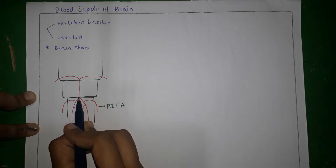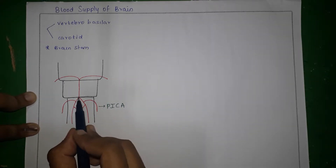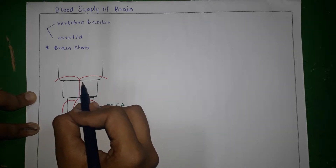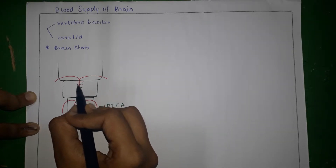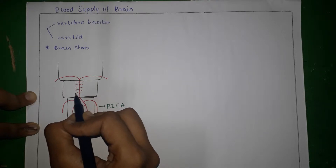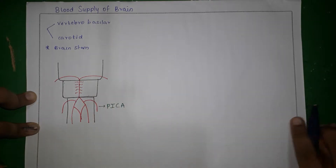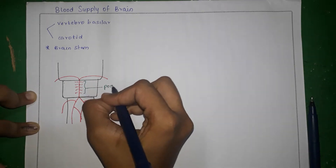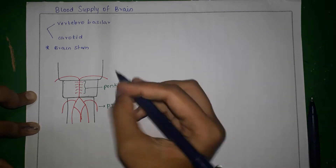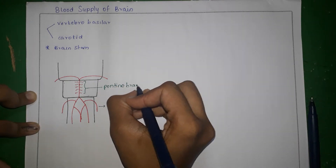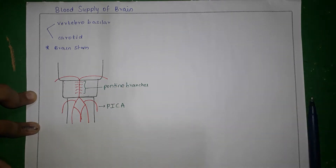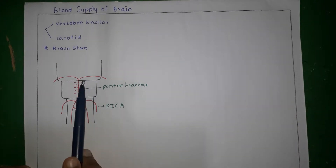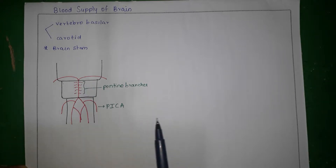After formation of the basilar artery at the pontomedullary junction, the basilar artery gives small branches called the pontine branches, which supply the medial part of the pons. The blood supply of the lateral part of the pons can be divided into one supplying the rostral pons and one supplying the caudal pons.